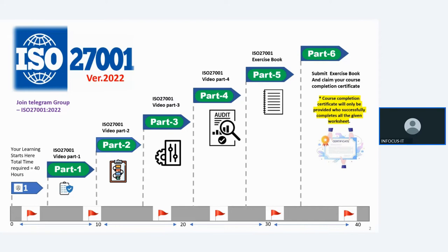If you want to start with the ISO 27001 Lead Implementer course with the new version, support is of course required. Without support, you won't be able to do anything. So for your support, I have created a Telegram group. You can search the group by the name 'ISO 27001 2022.' The description of this Telegram group is also shared in the video description — you can find it from there as well.